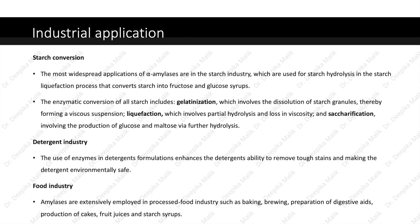Amylases have many industrial applications in different fields. They are used for starch conversion — the most widespread application of alpha amylases is in the starch industry, where they are used for starch hydrolysis in liquefaction processes that convert starch into fructose and glucose syrups. The enzymatic conversion of starch includes gelatinization, which involves dissolution of starch granules forming a viscous suspension; liquefaction, which involves partial hydrolysis and loss in viscosity; and saccharification, involving the production of glucose and maltose via further hydrolysis. Amylases are also used in detergent industries, where they enhance the detergent's ability to remove tough stains while making it environmentally safe.